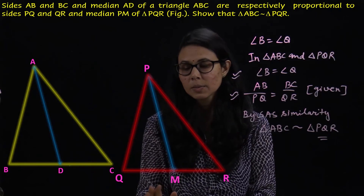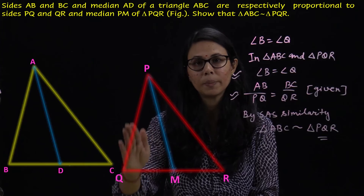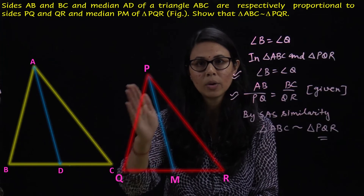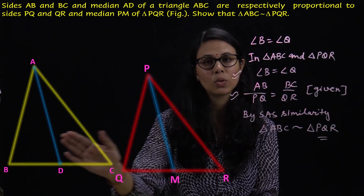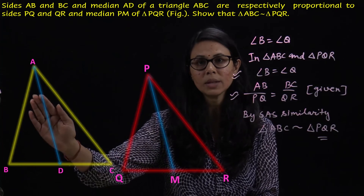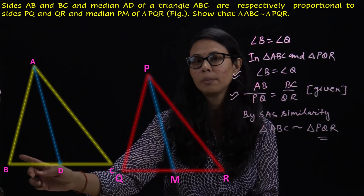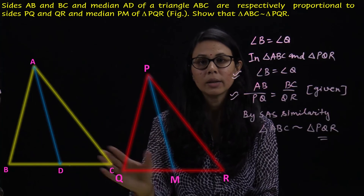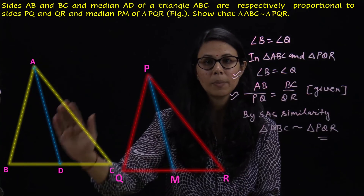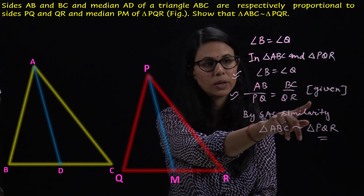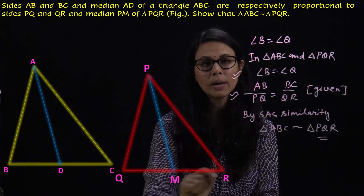For this question, two triangles are given with AB upon PQ equal to BC upon QR equal to AD upon PM, where AD and PM are the respective medians. We first proved triangle ABD similar to triangle PQM by SSS similarity, giving angle B equal to angle Q. Then in triangles ABC and PQR, since angle B equals angle Q and AB upon PQ equals BC upon QR, by SAS similarity triangle ABC is similar to triangle PQR.